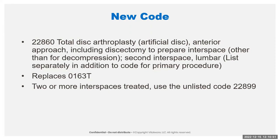There are some specific coding instructions within the CPT book. The 22860 is intended to be reported for the second inner space in conjunction with the 22857. If you treat more than two inner spaces, then you use the 22899, the unlisted code, for the entire procedure. So if you do three or four, you're not going to report the 22857, the 22860, plus any multiple units — you are just going to report the unlisted code for the entire procedure.